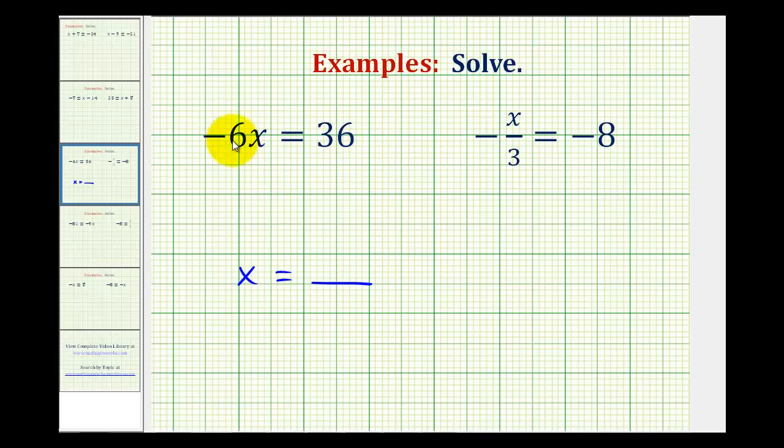So we need to recognize that negative 6x means negative 6 times x. So we want to undo this multiplication in order to isolate the variable. Well, the opposite operation of multiplication is division. So in this example, we'll have to divide both sides by negative 6.